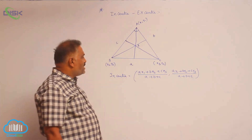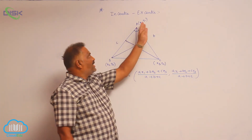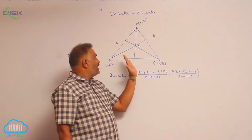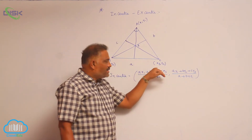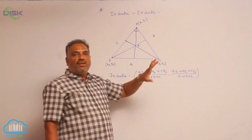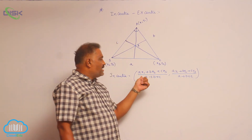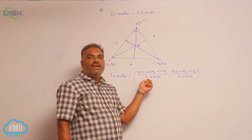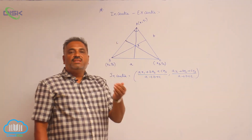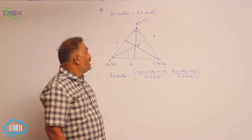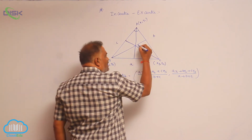To be very clear: x1, x2, x3, y1, y2, y3 are the coordinates of the vertices of the triangle, whereas the small letters a, b, c are the lengths of the sides of the triangle. This is the incenter.